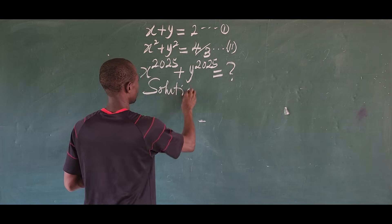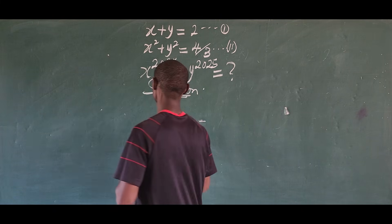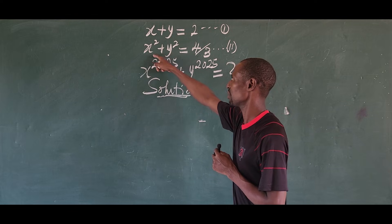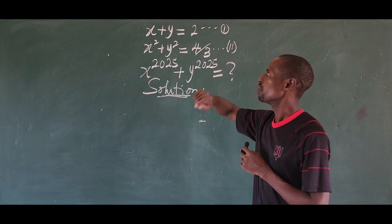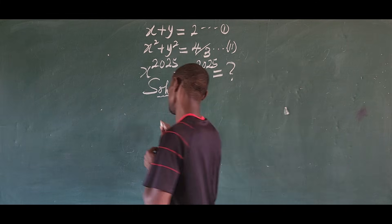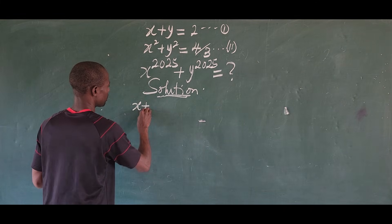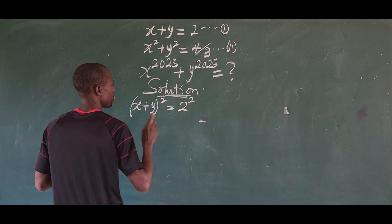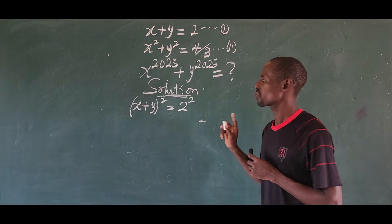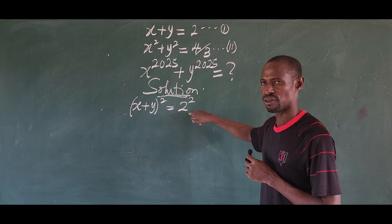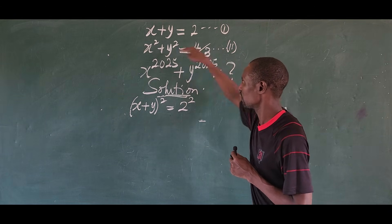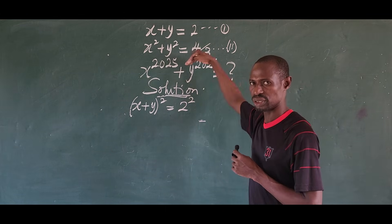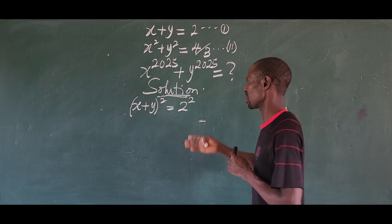Let's begin our solution. The first thing we're going to do is look at equation 1 and equation 2. We want to bring an expression of this kind from equation 1, and to do that we have to square both sides of equation 1. We're squaring both sides because we want to get 4 on one side so we can compare or equate it to equation 2.